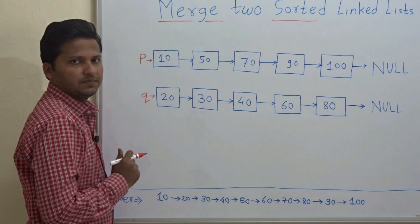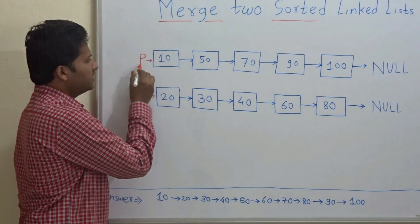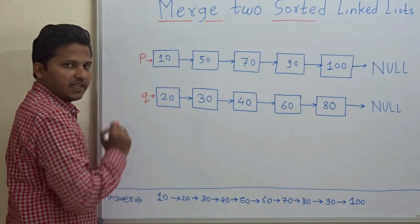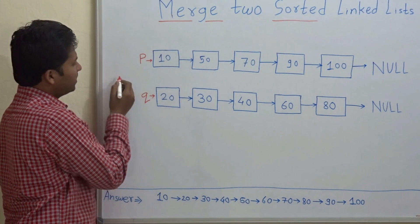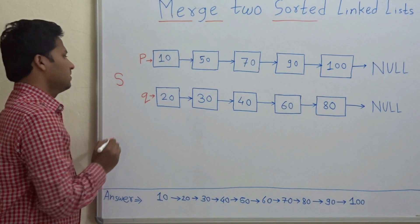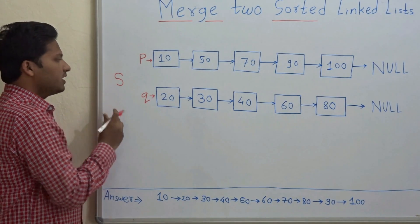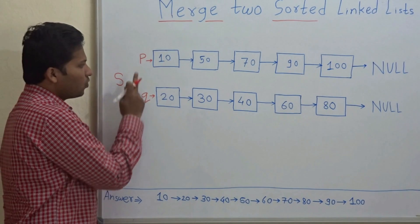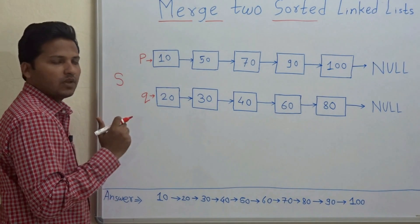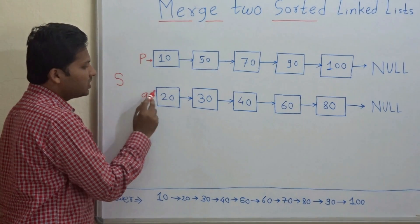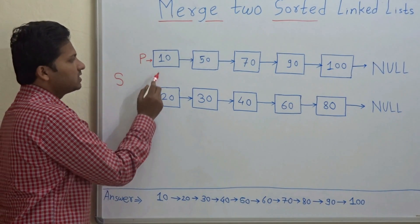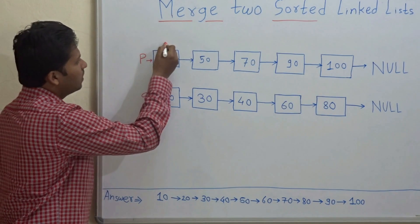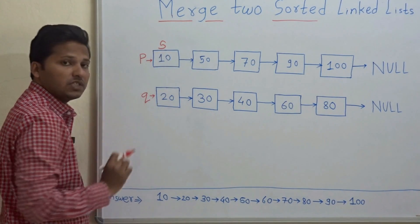So now let's see how to do this. P is pointing to the head of the first linked list and Q is pointing to the head of the second linked list. There is one more pointer — the name of the pointer is S and this can be called the sorting pointer. The pointer S will initially point to the node which has the lesser value. Here P is pointing to 10 and Q is pointing to 20, so S will initially point to 10 in the first linked list.